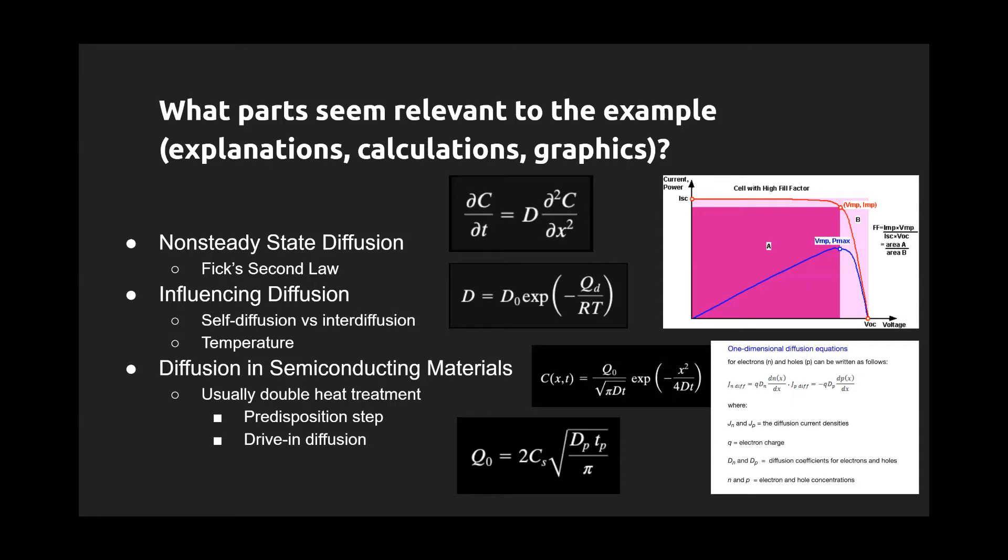Non-steady-state diffusion is incredibly impactful in solar cells due to the unpredictability of photons striking the panels. However, this unpredictability leads to current flow and, in turn, power.